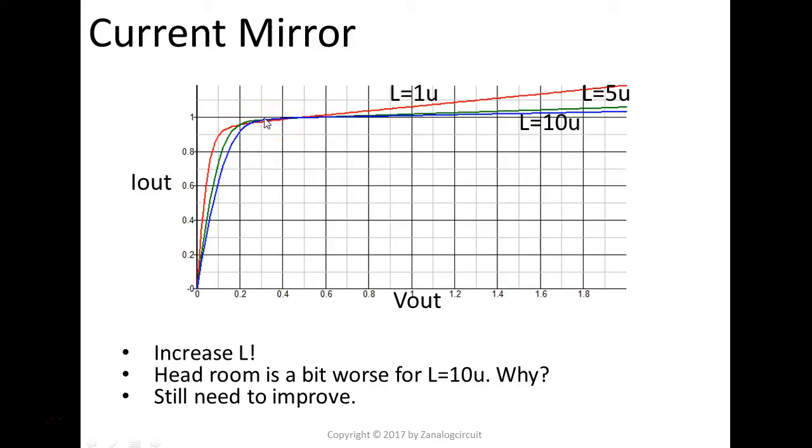Why? Well, actually, in order for M2 to be in saturation, Vout needs to be at least one overdrive voltage. We kind of keep the W the same, and then while increasing the L, that means for the same current, the overdrive voltage is higher.